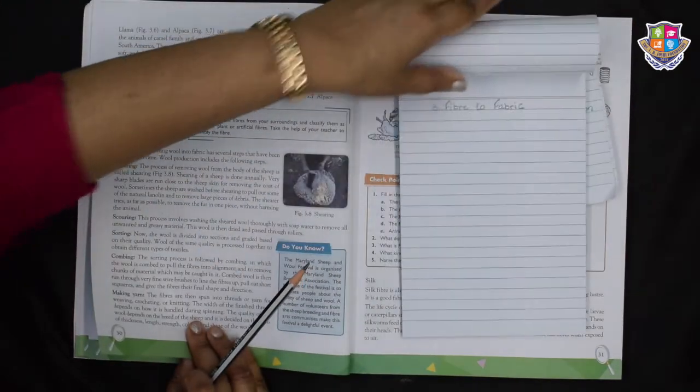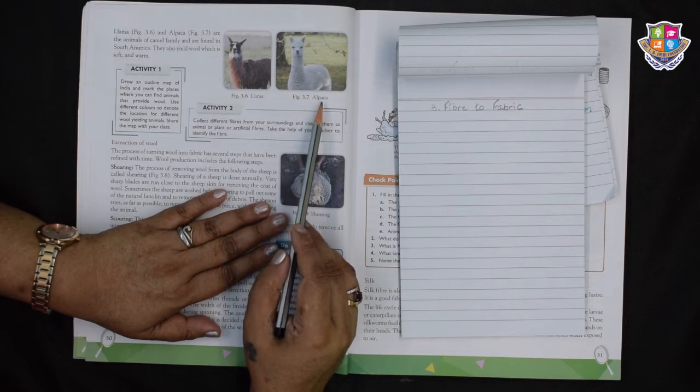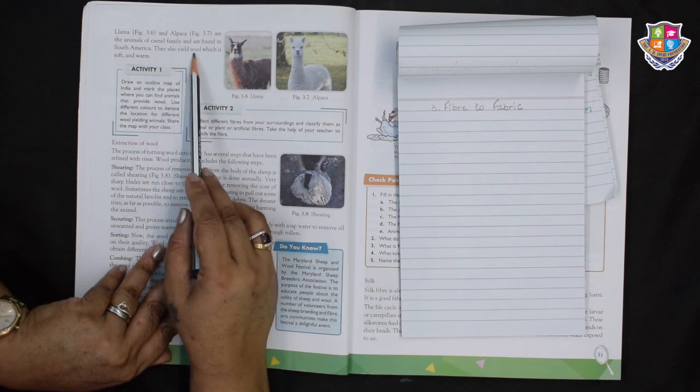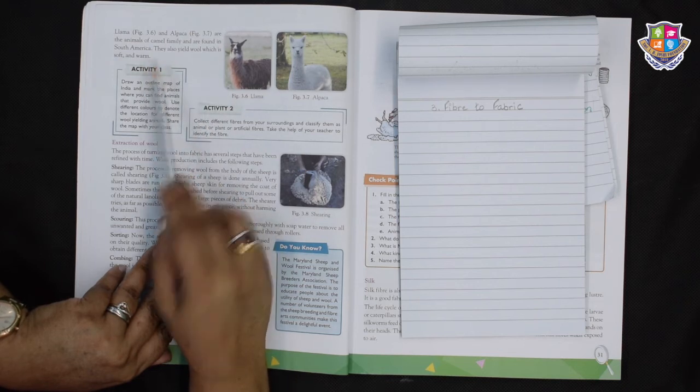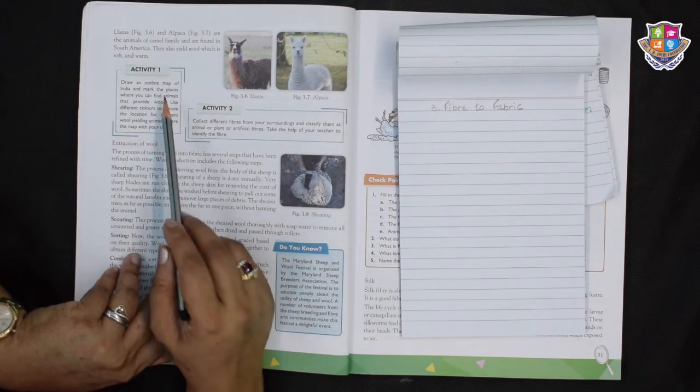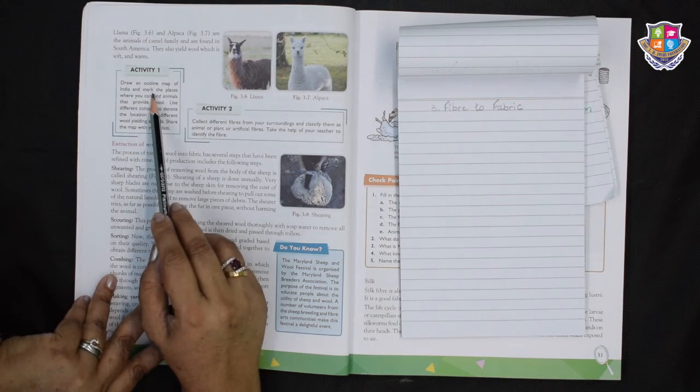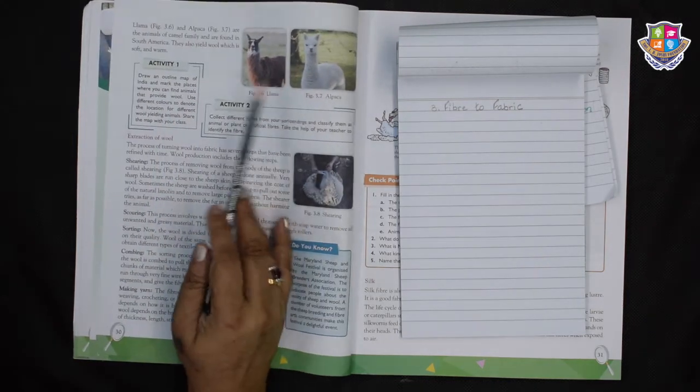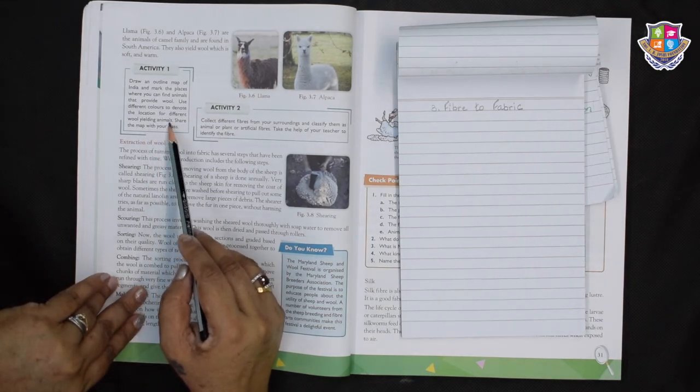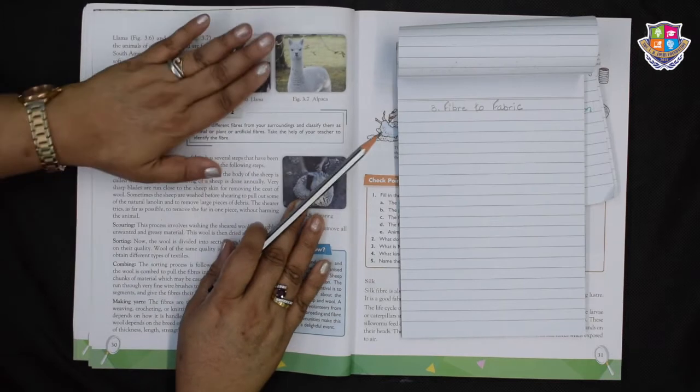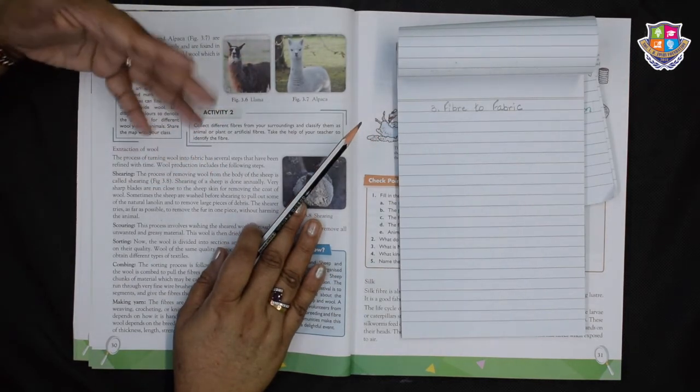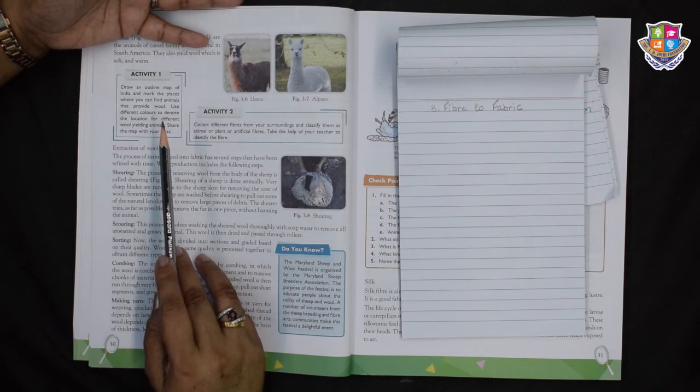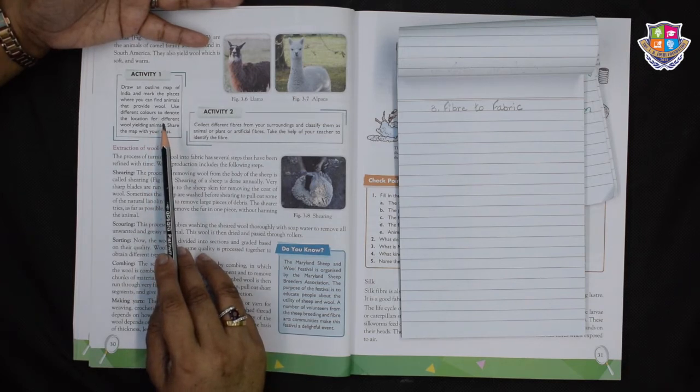Now coming to the camel wool, the fur of the body of the camels is also used as wool. This wool is sometimes left in its original colour because of its natural beauty. Here we have the llama and the alpaca, animals of camel family found in South America. They also yield wool which is soft and warm. Now let us begin with activity number 1. Draw an outline map of India and mark the places where you can find animals that provide wool. Use different colours to denote the location for different wool yielding animals.